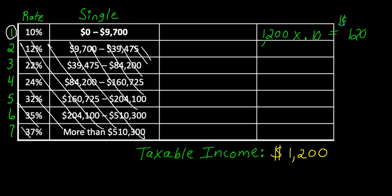So if you earn $1,200, you have to pay $120 in taxes for the year, federal taxes.